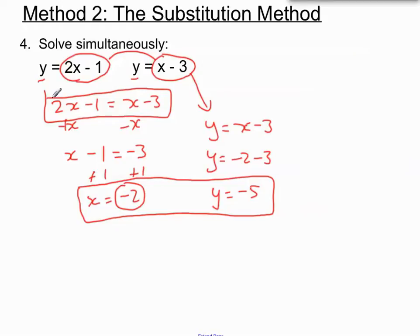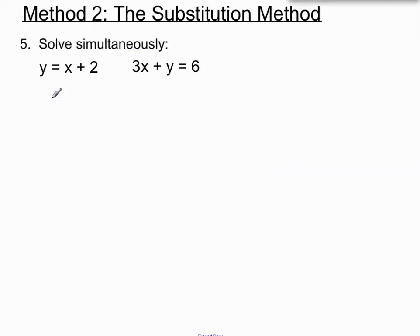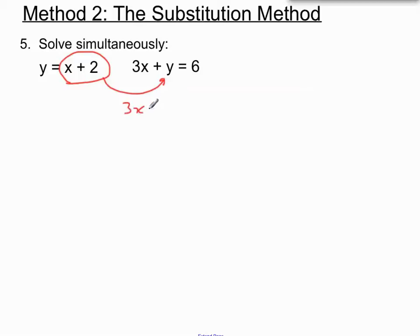Here's another slightly harder substitution example. I've got one equation with y equals, but the other one doesn't. So we can take what y equals and substitute it in wherever there's a y in the other equation. We're left with 3x plus, instead of y, we put x plus 2 from the other equation — merging the two together.